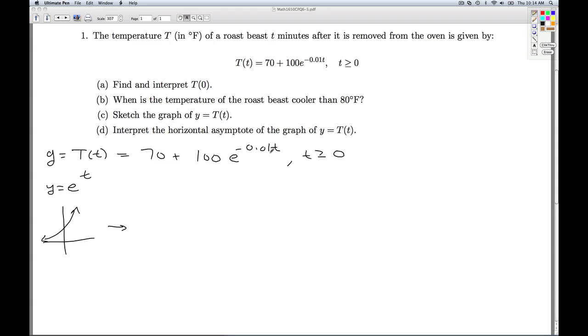Multiplying the t here by negative 0.01 is going to induce a reflection about the y-axis as well as a horizontal expansion. And so then it's going to look something like this.